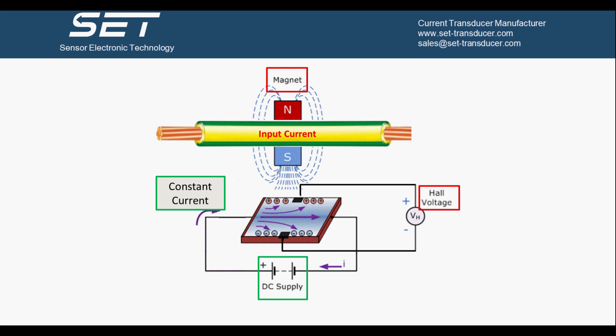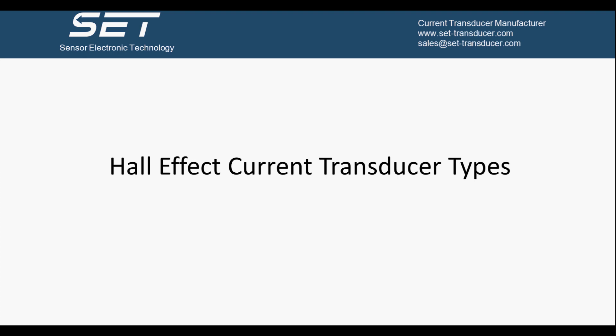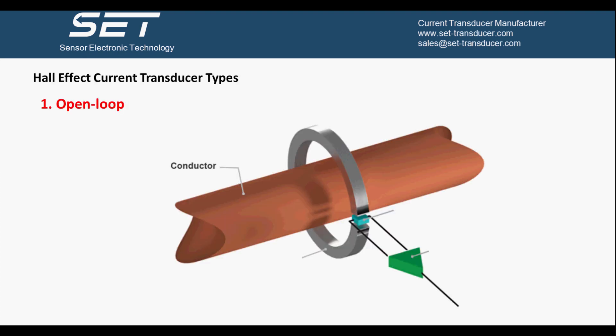Now let's see Hall Effect Current Transducer types. By using the Hall Effect principle to build a current transducer, there are two types of current transducers. The first type is the open loop Hall Effect current transducer. When primary current goes through the conductor, it will generate a magnetic field around the conductor. If we put the conductor through the center of a magnetic core to concentrate the field, and place a Hall element in the gap of the core, we will get the Hall Voltage. The Hall Voltage then passes through an amplifier to become an easy-to-read value.